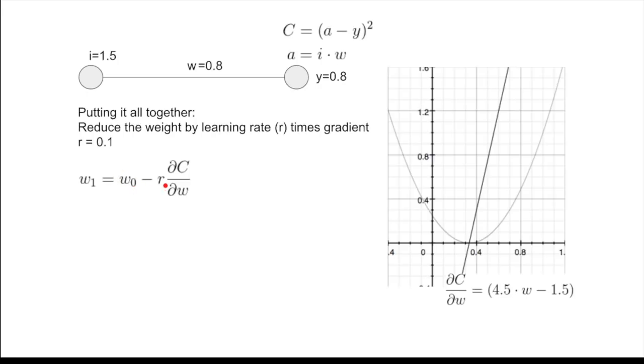the rate of change of C with respect to that w, times the learning rate. And in this case, we have 0.1 here as our learning rate. 4.5 times w minus 1.5 is our gradient. And we are ready to start calculating numbers.